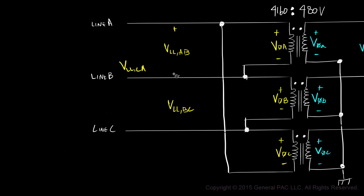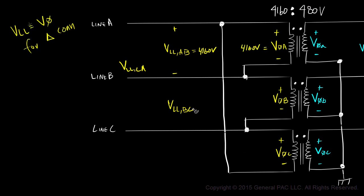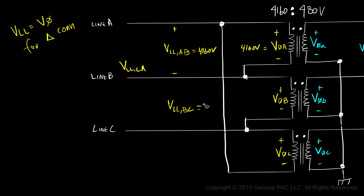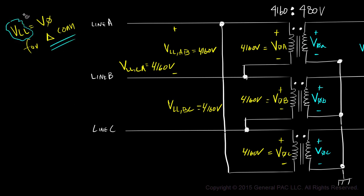If we took a voltmeter and measured across line A and line B on the primary side of our transformer, we should expect 4160 volts — this is our line-to-line voltage assumed in Part 1. Since the primary side is connected in delta, the line-to-line voltage equals the phase voltage. So measuring across the polarity side and non-polarity side of winding A, we should expect 4160 volts. Similarly, the line-to-line voltage across line B and line C, and across line C and line A, should also equal 4160 volts. Phase B and phase C voltages should likewise equal 4160 volts. For a delta-connected transformer, the line-to-line voltage equals the phase voltage.